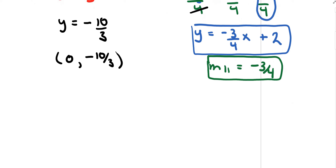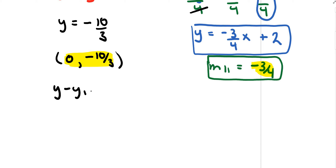So the goal is to write the equation of a line that has a slope of negative 3 over 4 and a y-intercept value of negative 10 over 3. I'll take the longer approach and use the point-slope form of a line.